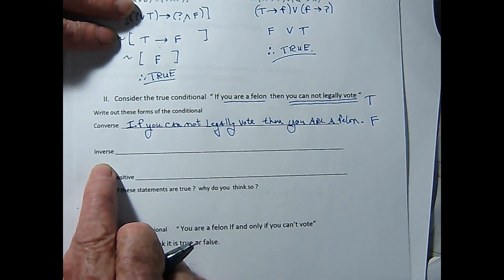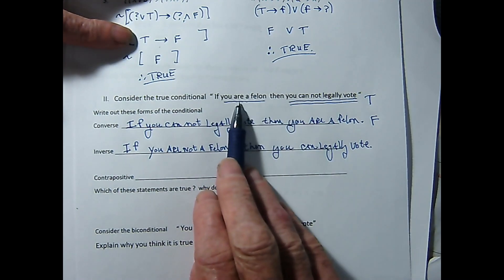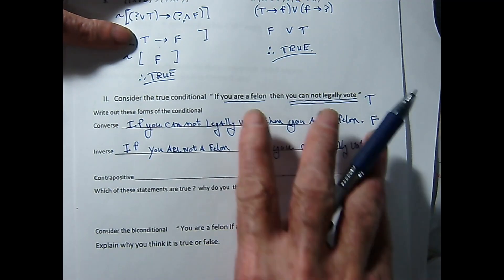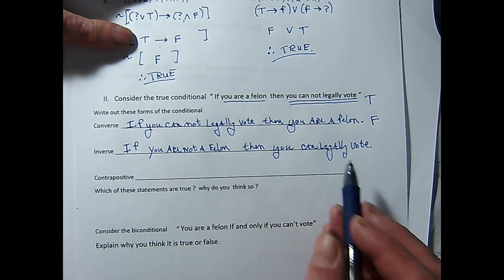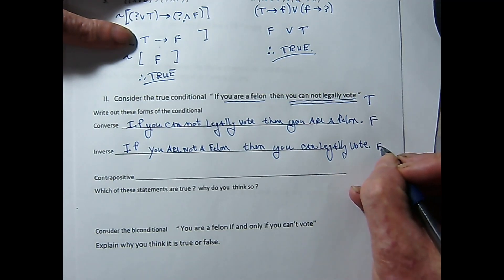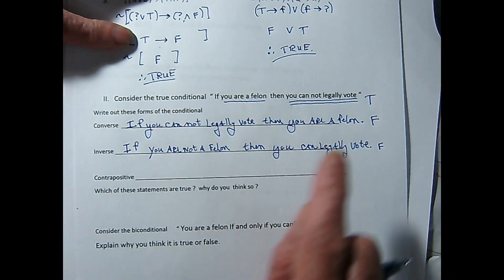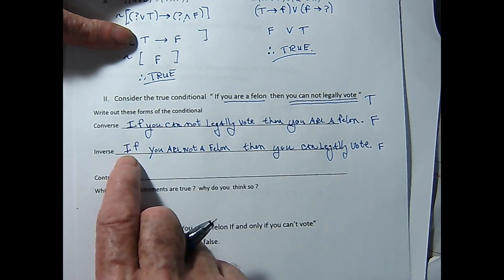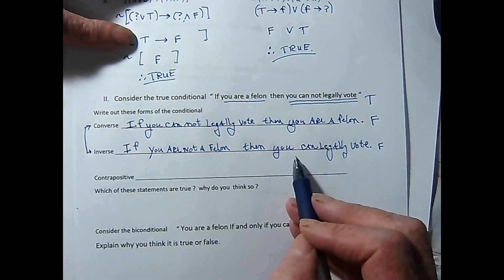Now I'm going to check on that inverse — how does somebody get an inverse anyway? Here I've written the inverse of the original conditional: if you're a felon, then you cannot legally vote. To get the inverse, I negate the two terms, and it says, if you're not a felon, then you can legally vote. And I'm going to say that's also false. Lots of people are not felons who still cannot legally vote. You're not a felon, but you can't vote. So we know that the inverse is false, and you're probably remembering that the converse and inverse are logically equivalent. Thus, when the converse was false, the inverse had to have been too.